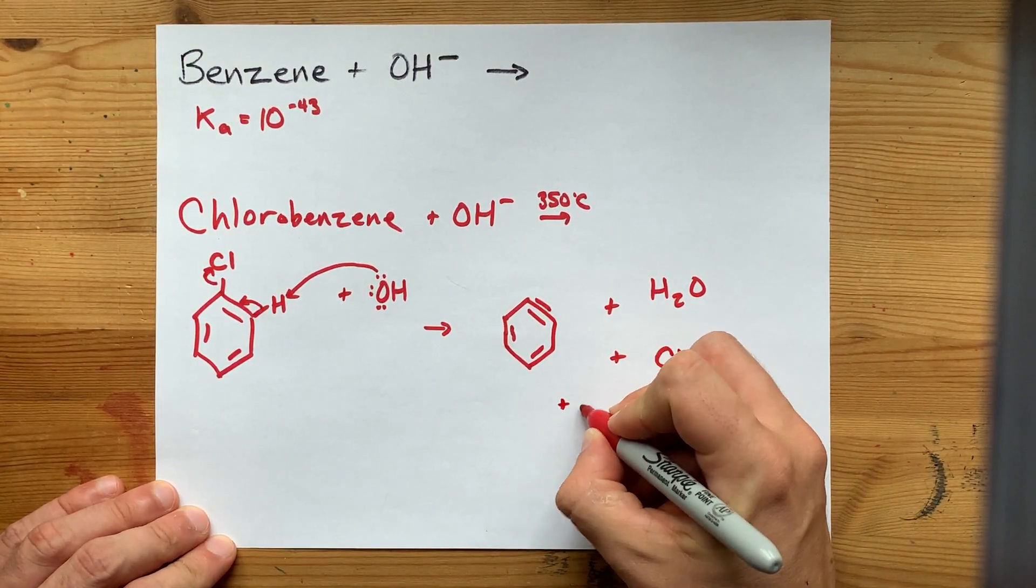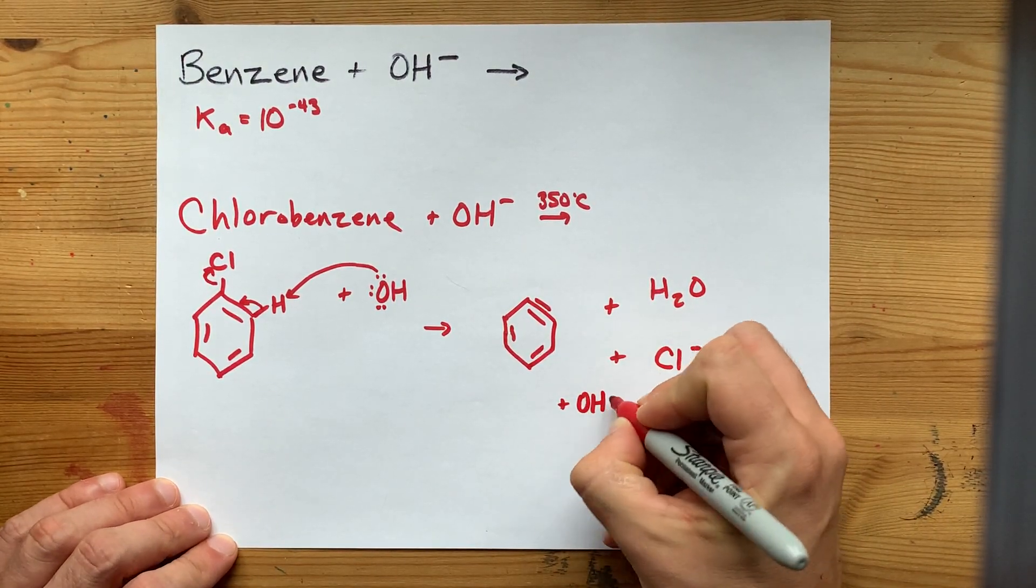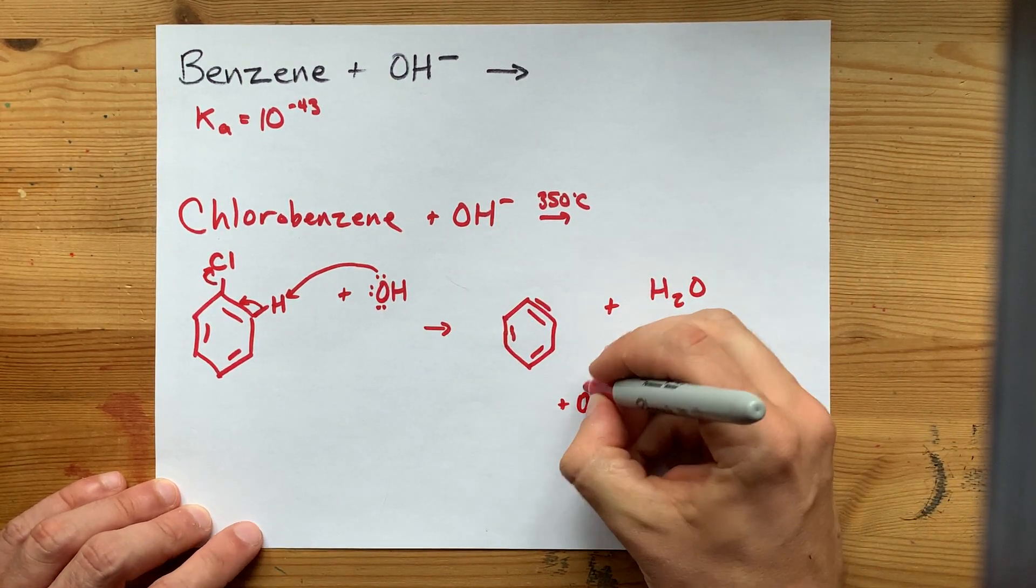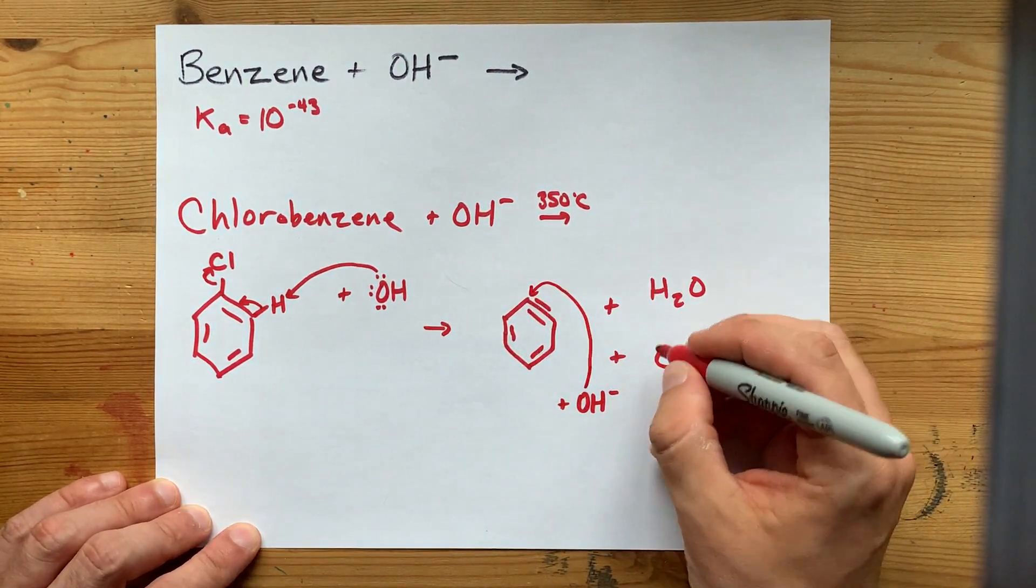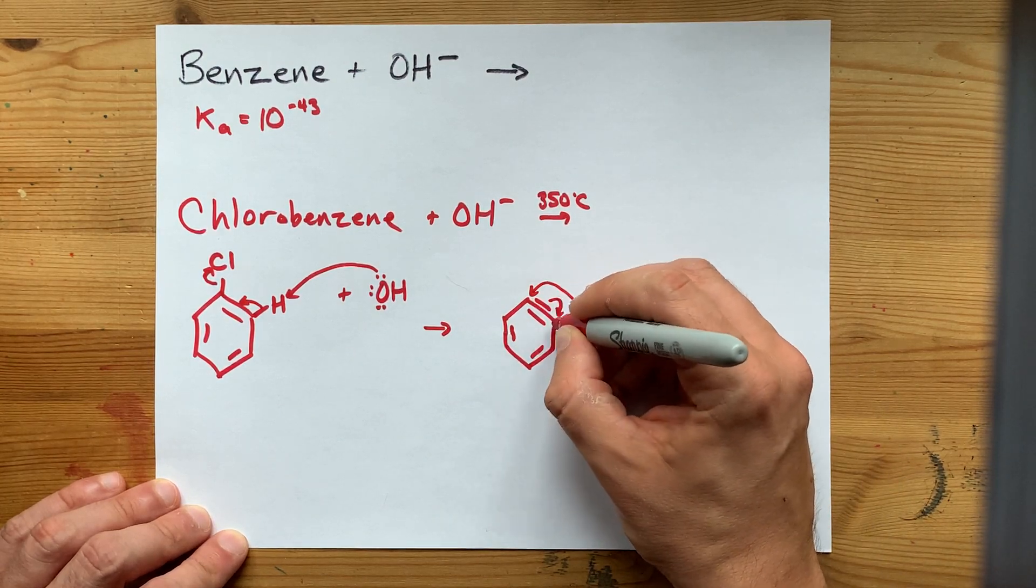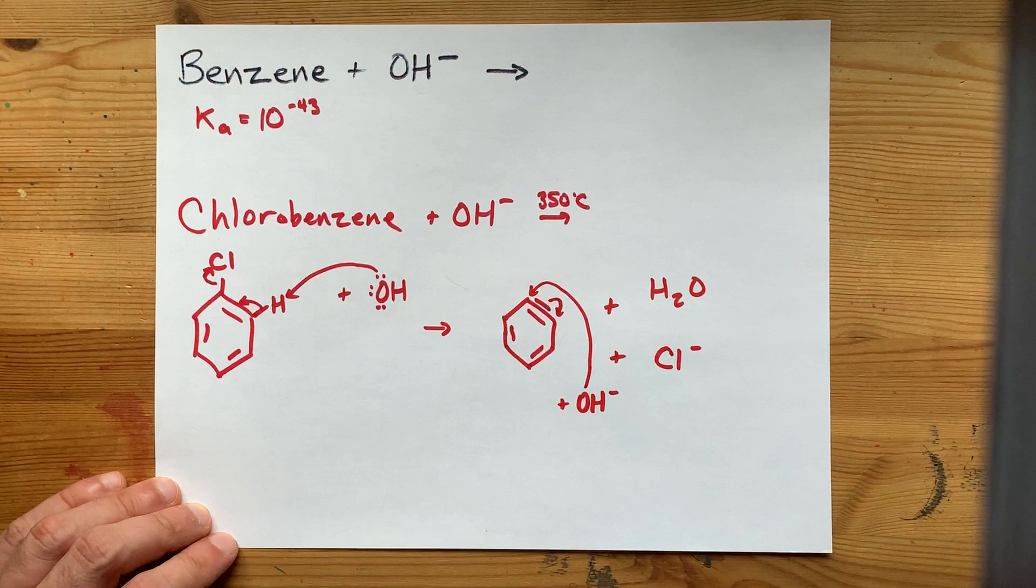At that point, another OH- particle, of which you have a whole bunch because it's one of your reactants, can attack one of those carbons and push electrons from one of the pi bonds onto one of the carbons.